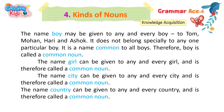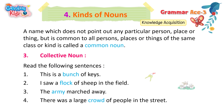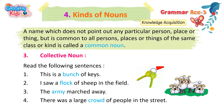The name 'girl' can be given to any and every girl and is therefore called a common noun. The name 'city' can be given to any and every city and is therefore called a common noun. The name 'country' can be given to any and every country and is therefore called a common noun. A name which does not point out any particular person, place, or thing but is common to all persons, places, or things of the same class or kind is called a common noun.